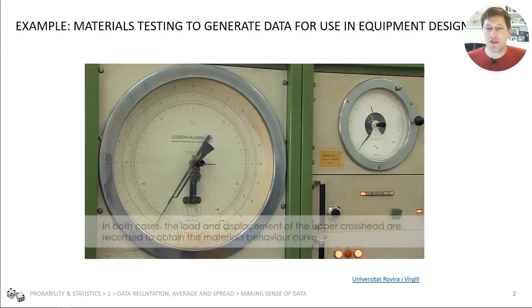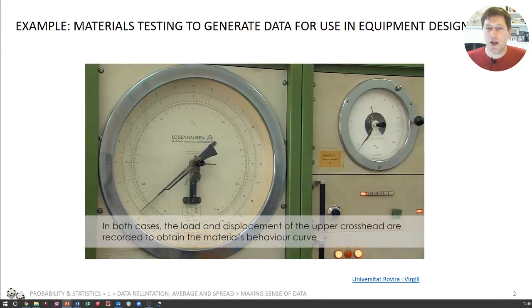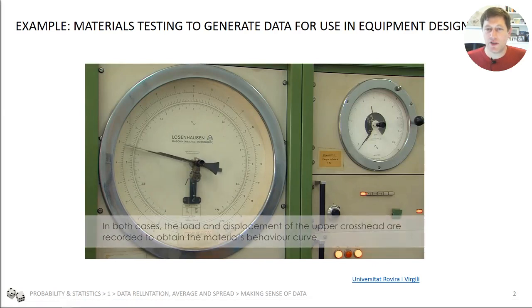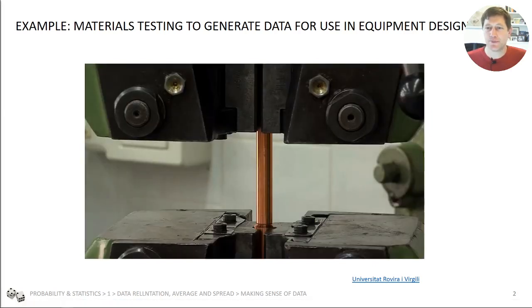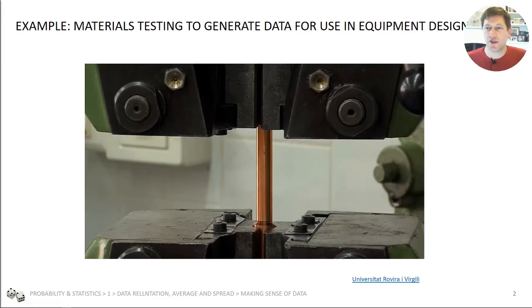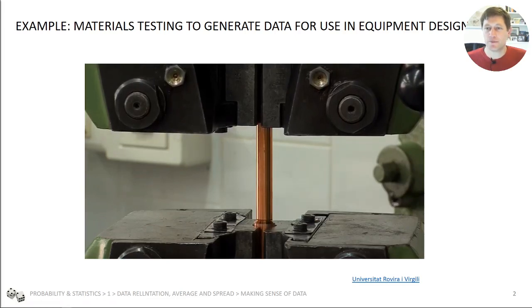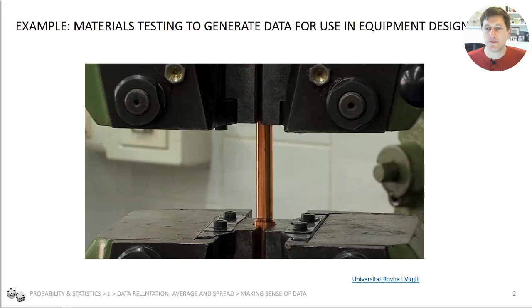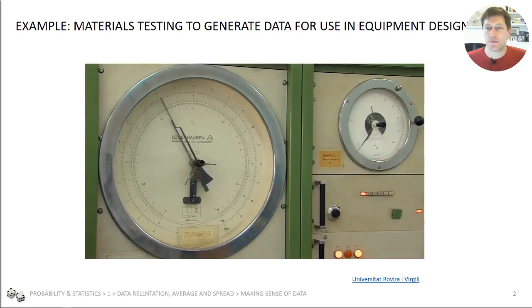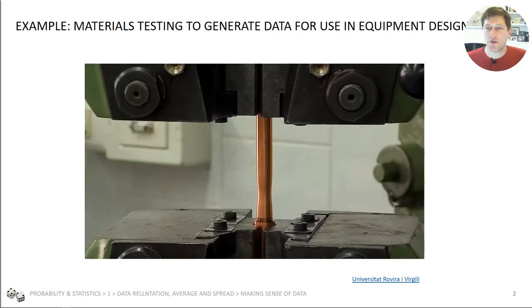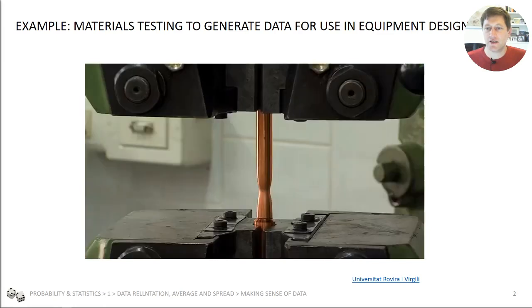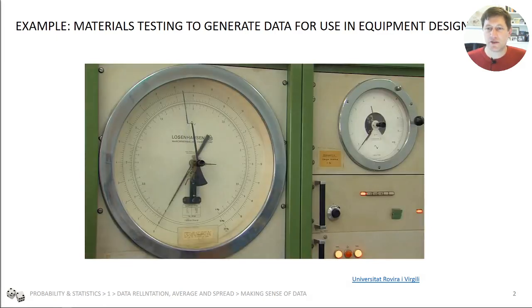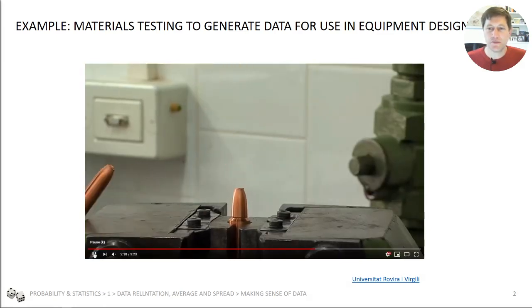So what happens is the machine starts to pull apart and the force that it measures goes up. You can see the head moving, starts to stretch the sample. Force keeps on going up and then you can see it necking and finally it fails. And this really is the starting point for understanding how to build something out of metal.